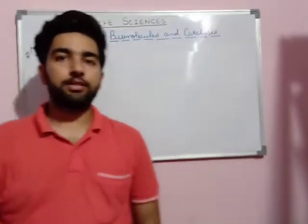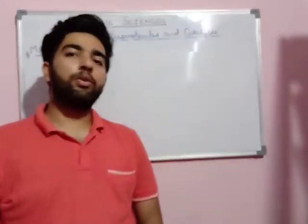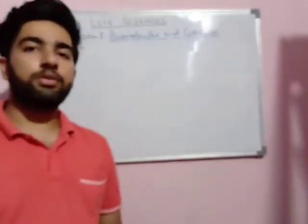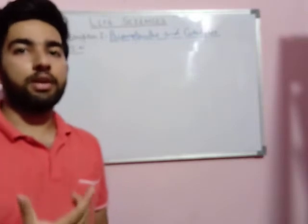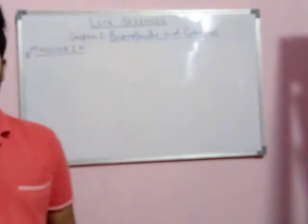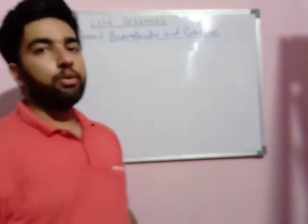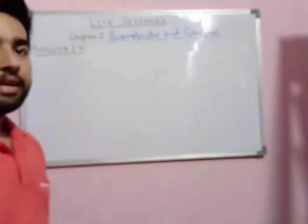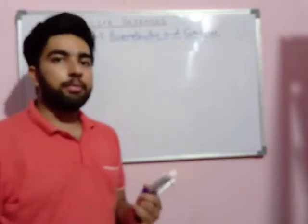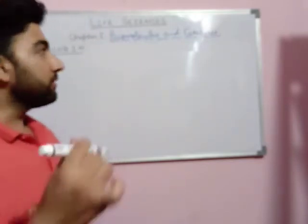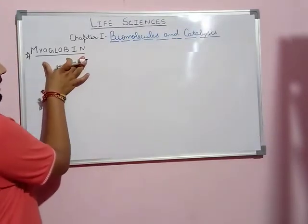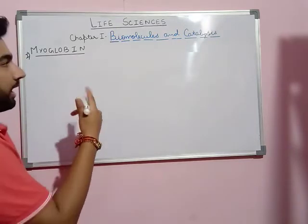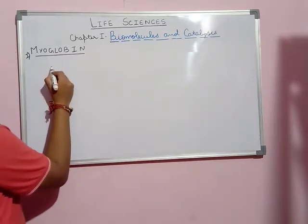Good afternoon friends, welcome to the life science classes. In today's video we're going to discuss about globular proteins. In my last video I told you about some structural proteins like collagen, elastin, and keratin. Now in today's video we're going to discuss about two major globular proteins: one is myoglobin and the other is hemoglobin. We'll discuss step by step, starting with myoglobin, the oxygen-carrying protein, beginning with its structure.